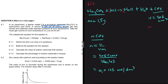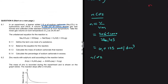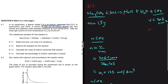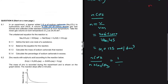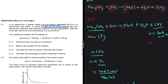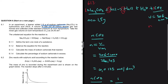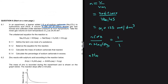Now using the mole ratio: the number of moles of CO₂ divided by the number of moles of Na₂CO₃ equals the ratio of their balancing coefficients. The balancing coefficient on CO₂ is one, and on Na₂CO₃ is also one. So the number of moles of Na₂CO₃ equals the number of moles of CO₂, which is 0.0125 moles.